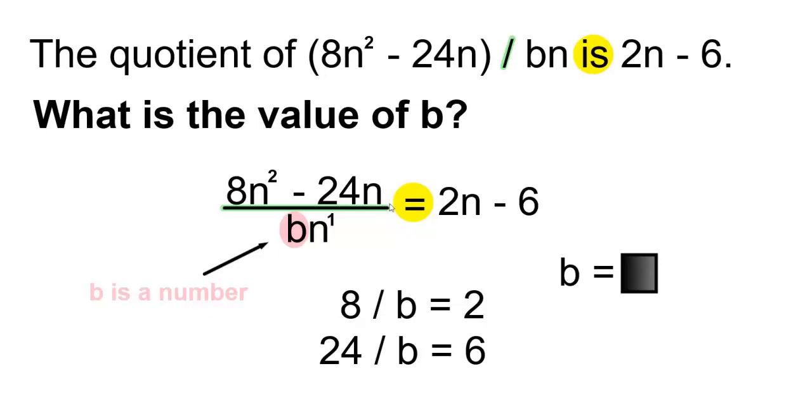And n¹ divided by n¹ is n⁰, so the ns will cancel.